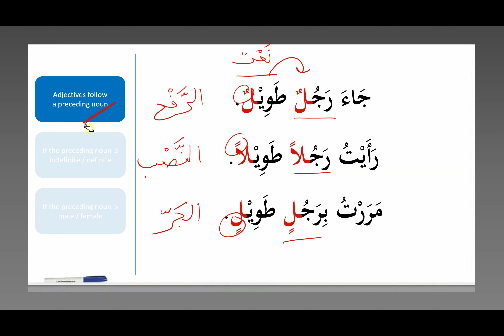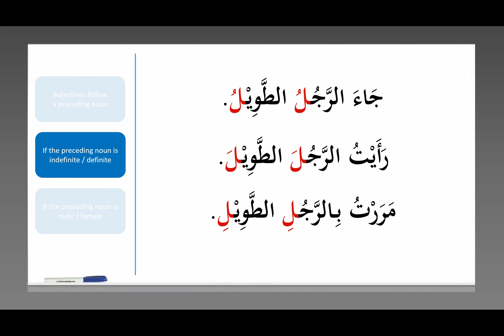So what you're seeing is that no matter what حالة the noun goes into, the adjective that comes after it, describing it, is going to be in the same حالة — nominative, associative, or genitive case. Something to be mindful of: when an adjective follows a preceding noun, it takes the same grammatical case. These are التوابع, case followers — it's literally just following the case of the noun that comes before it.